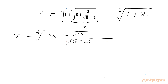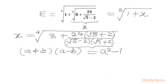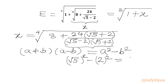Now we will rationalize our denominator. So I will multiply root 5 plus 2 in both the numerator and the denominator. The denominator will give us the a plus b times a minus b form, which gives us a squared minus b squared — that is root 5 whole square minus 2 whole square, which equals 5 minus 4, which is 1.